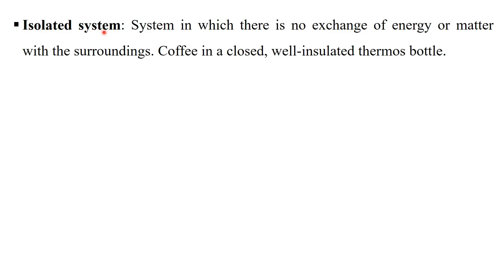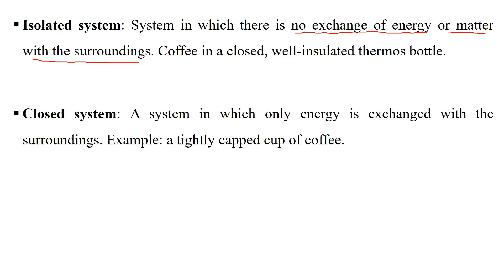In an isolated system, there is no exchange of matter or energy with the surrounding. For example, when you have coffee in a thermos, that coffee will stay hot because heat cannot be exchanged with the surrounding. So it is an isolated system — energy and matter do not exchange with the surrounding.